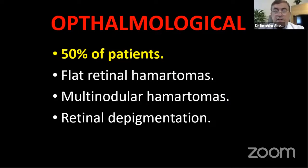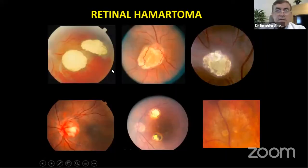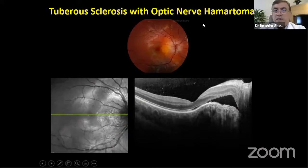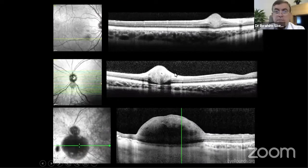Ophthalmological manifestation of the disease affects 50% of patients with tuberous sclerosis, making ophthalmologist referral essential. Manifestations include retinal hamartomas visible throughout the retina, and optic nerve hamartomas. A 2015 paper from Denmark described OCT of maculopathy and optic nerve findings in patients with tuberous sclerosis.